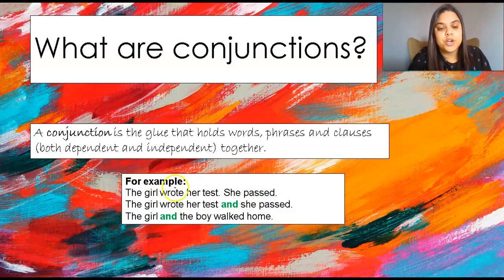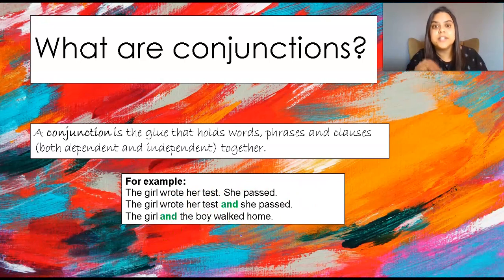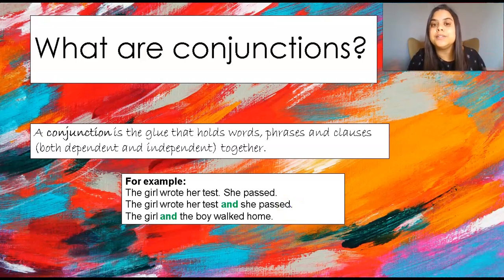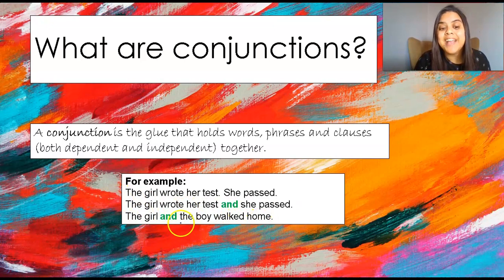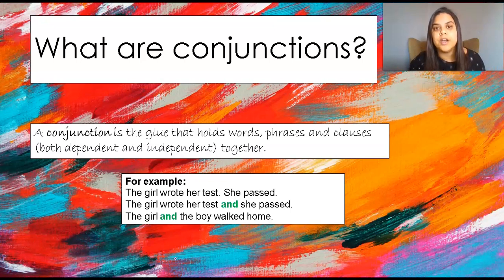For example: 'The girl wrote her test. She passed.' Those are two different sentences. I can join these two sentences by using a conjunction: 'The girl wrote her test and she passed.' That is joining the two sentences together. But conjunctions can also join two ideas or two concepts together. For example, 'the girl and the boy walked home' — the word 'and' in that sentence is also a conjunction. So conjunctions don't only join phrases or clauses; they also can join words together.